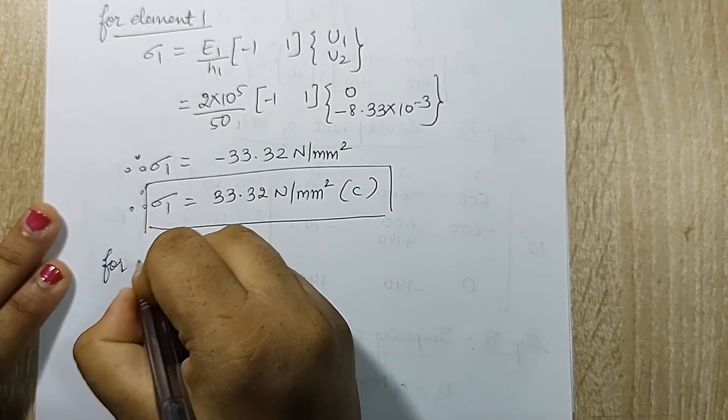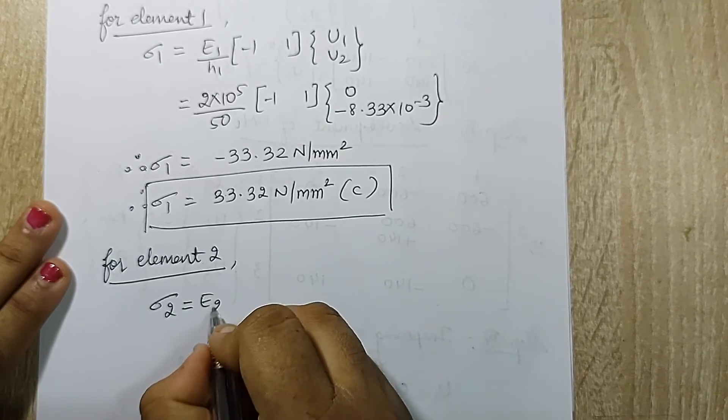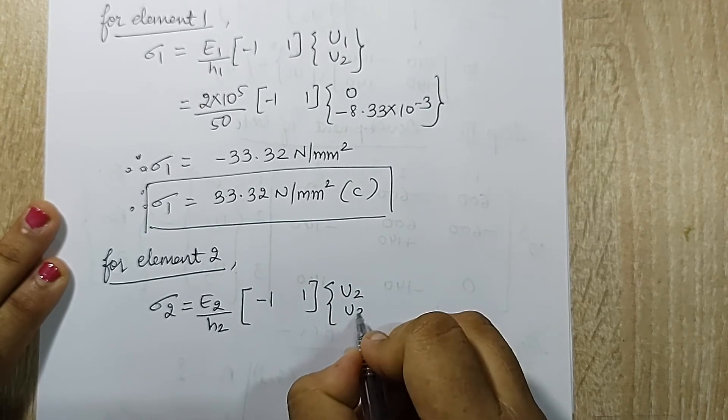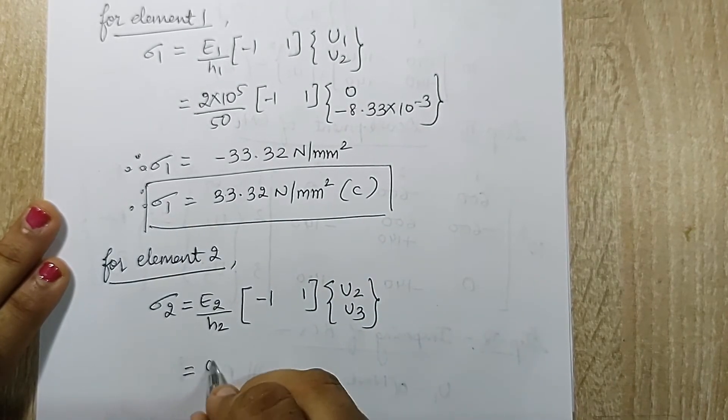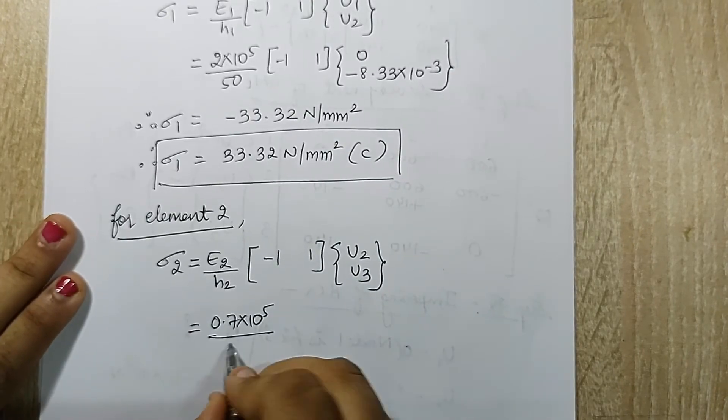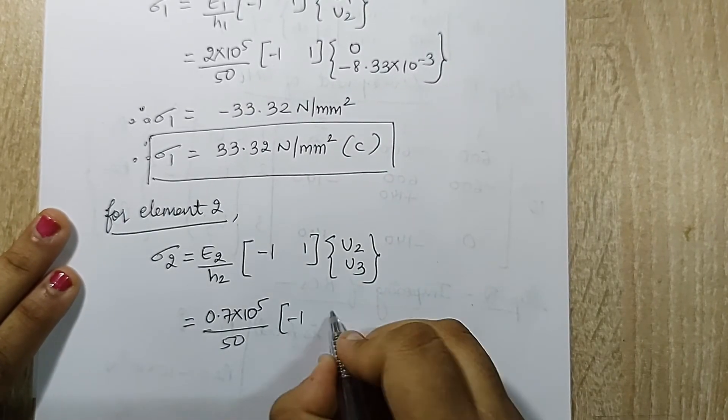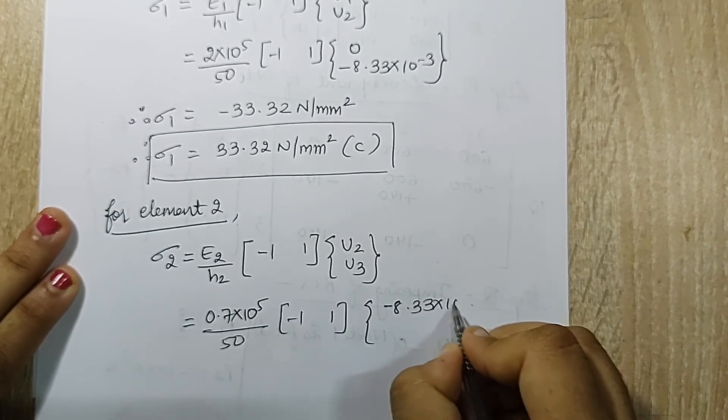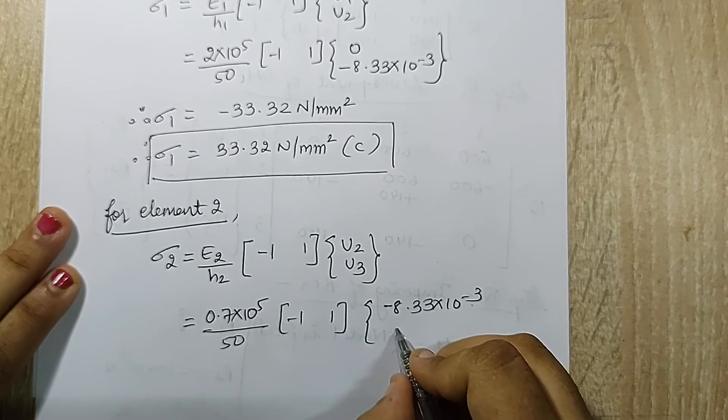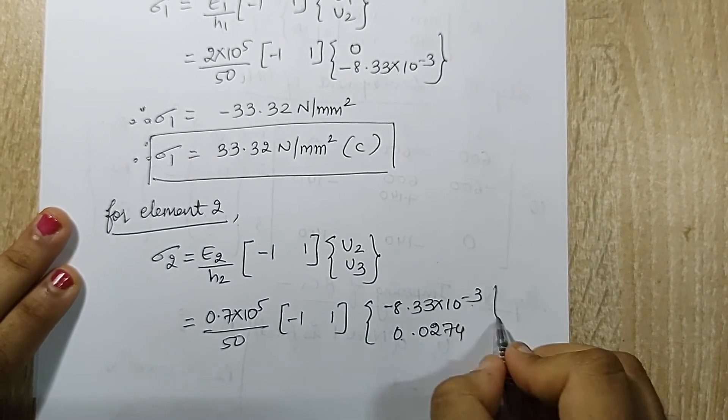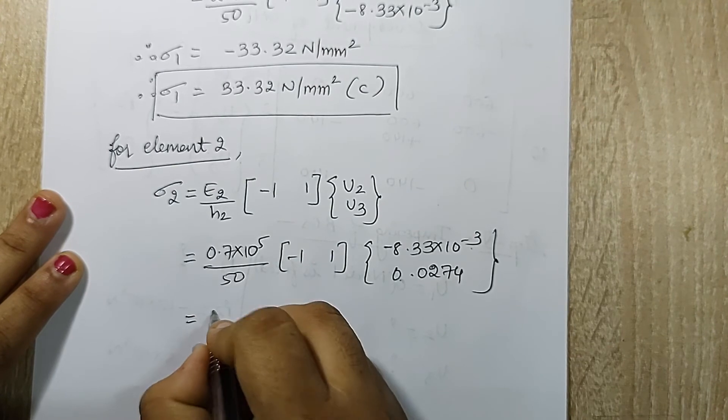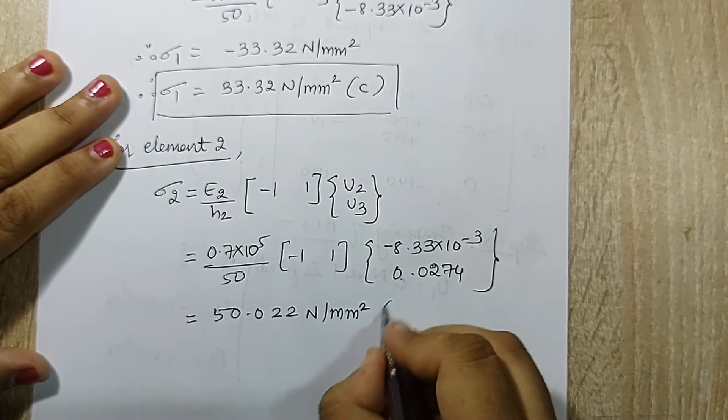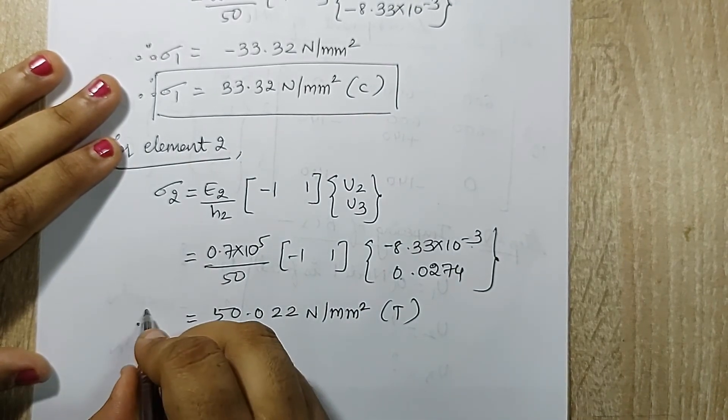Next I will solve for element 2. Sigma 2 is e2 upon h2 minus 1, 1, u2, u3. This is 0.7 into 10 raised to 5 upon 50, minus 1, 1. u2 is minus 8.33 into 10 raised to minus 3 and u3 is 0.0274. On solving I get the value as 50.022 N per mm square. I get a positive answer, so this is of tensile type.